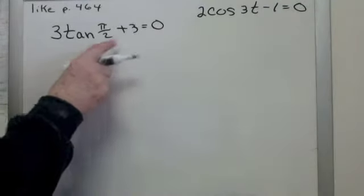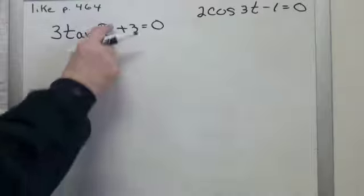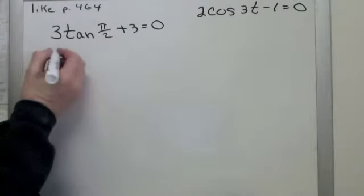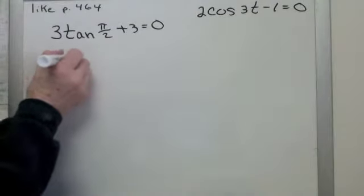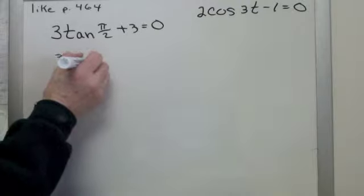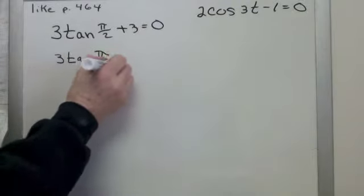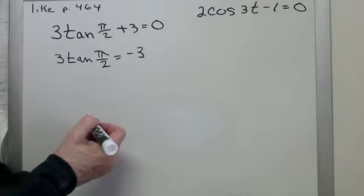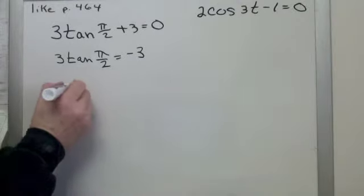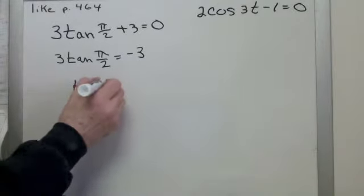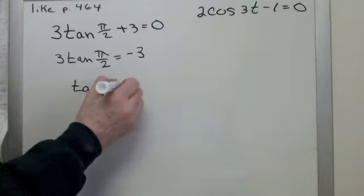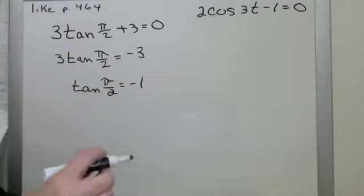Okay, here's another one, very similar. Instead of 3t, we have an x over 2. So again, we have to be careful with this one. First step, move the 3 over. So 3 tan x over 2 equals negative 3. What do we do next? Divide by 3. So tan x over 2 equals negative 1.